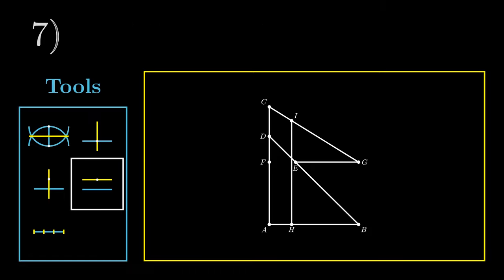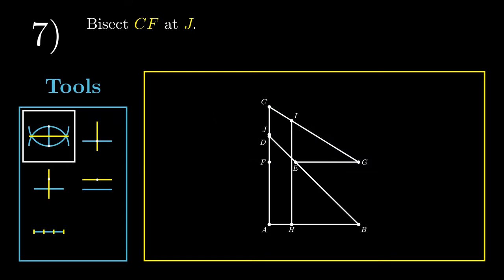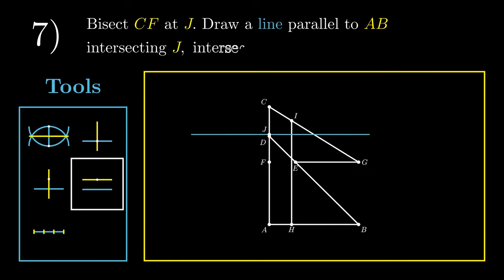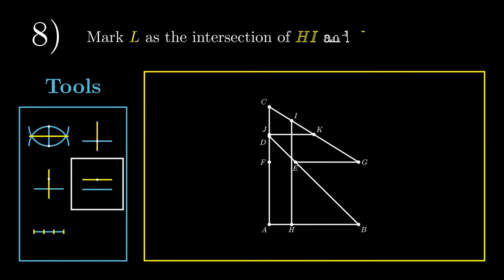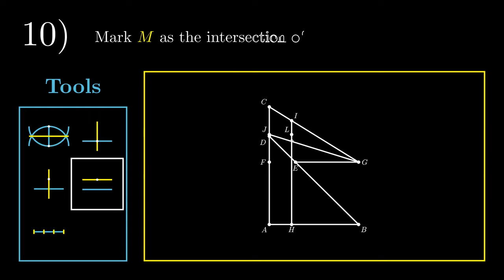For step 7, we're going to bisect the line CF at point J. To do this, we're going to construct the perpendicular bisector of CF. At the point of intersection, we obtain point J. We're now going to draw a line parallel to AB intersecting J, and this line would intersect CG at point K. For step 8, intersecting HI and JK gives point L. We no longer need line JK. For step 9, we're going to join JG. For step 10, HI and JG would intersect at point M. We no longer need line JG anymore.